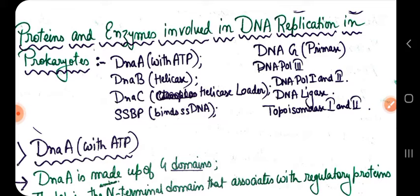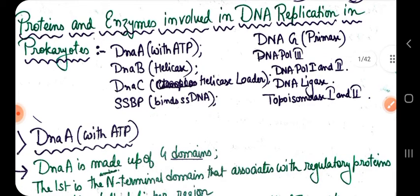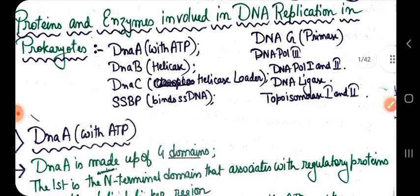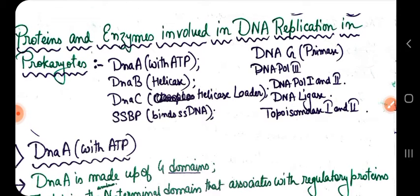DnaG is your primase, which synthesizes small RNA molecules called primers that initiate DNA synthesis. Then with the help of that primer, DNA polymerase 3 starts to catalyze and synthesize the strands from the 5' to 3' direction.